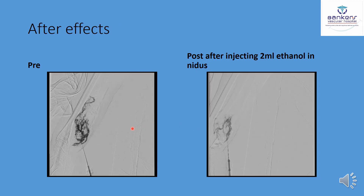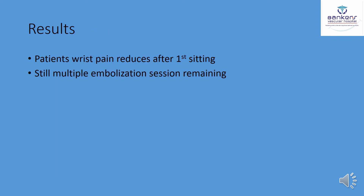These are the after effects. You can see the pre-embolization angiography images showing the entire nidus filling up. In the post-embolization angiography images, the nidus is no longer filling up — because that portion of the nidus has already been destroyed. This patient got very good, fantastic results after the first sitting of absolute ethanol embolization. However, multiple embolization sessions are still remaining.